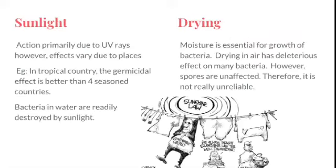Sunlight is an old and effective method where direct exposure kills microbes, primarily due to UV rays. However, effectiveness varies by climatic conditions and region. In tropical countries, the germicidal effect is better than in four-season countries, making sunlight the best method of killing germs in tropical regions.